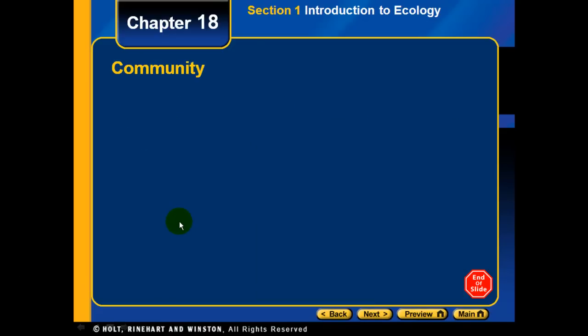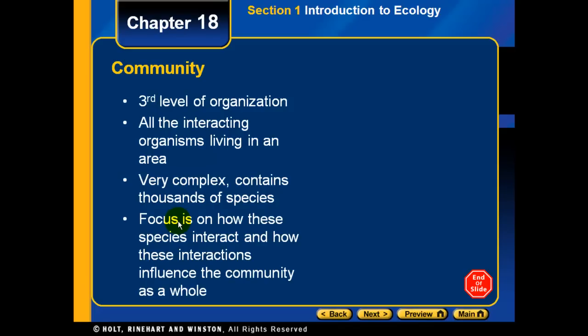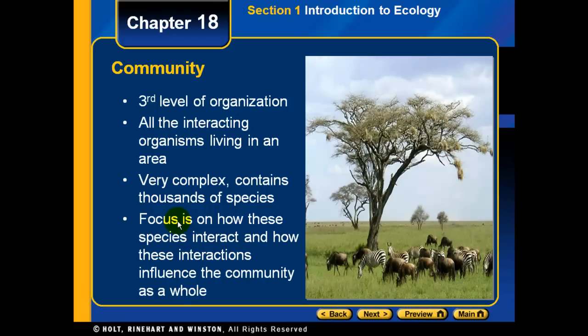If you take a whole bunch of different organisms together, you have a community — the third level of organization. A community includes all the interacting organisms that live in an area. It's very complex, containing thousands of species. The focus is on how these species interact with each other and how those interactions influence the community as a whole, including populations of zebras and plants.